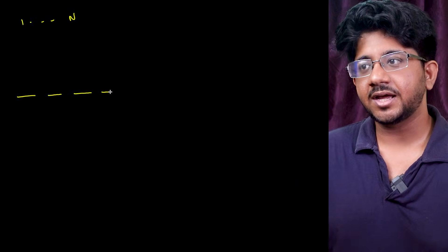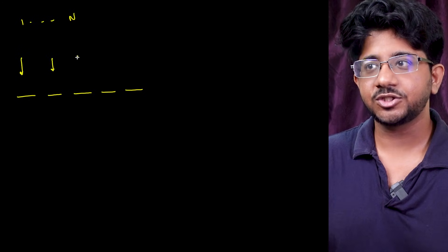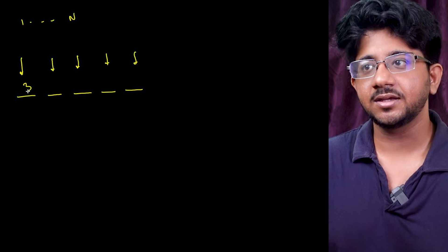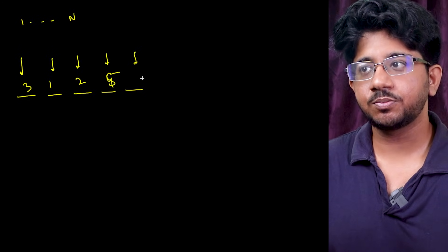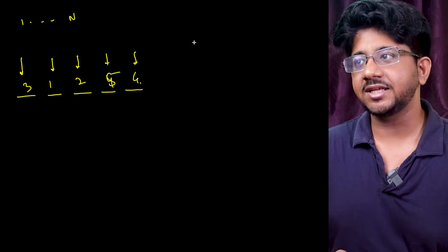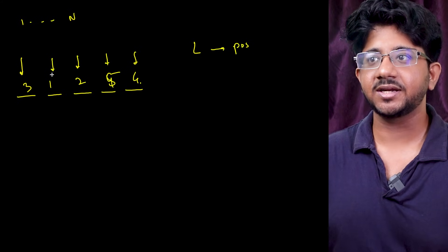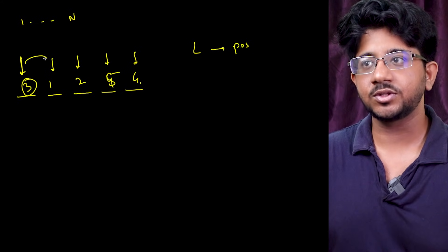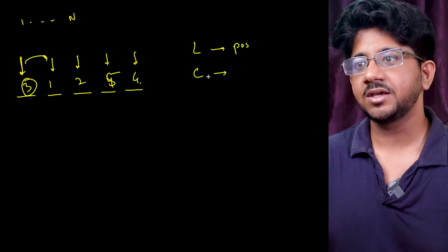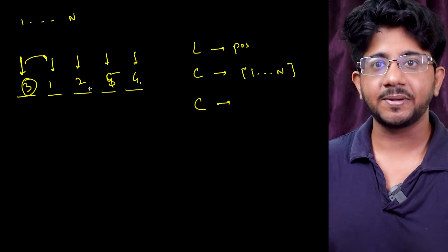For example generate all permutations of 1 to n right. If you think about this problem there are n places. In each place you can start generating the permutations by placing numbers in each position. So each place can be your level. So we can start designing the LCCM for this level will be the position at which index we are placing right now. Once you place here you can go to the next position.